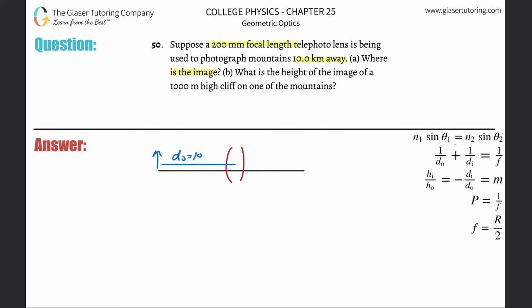That's 10,000 meters. Let's just convert everything. They also give you the focal length in millimeters. Once I start seeing units all over the place, I just say to myself let's just convert all to meters, so 0.2 meters.